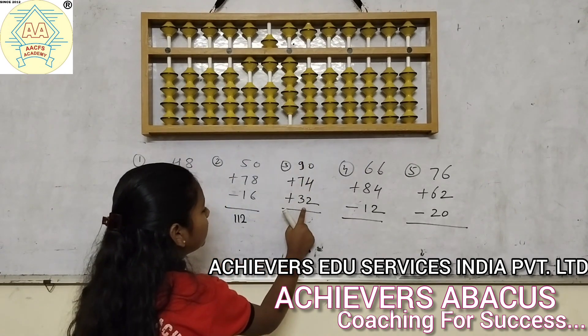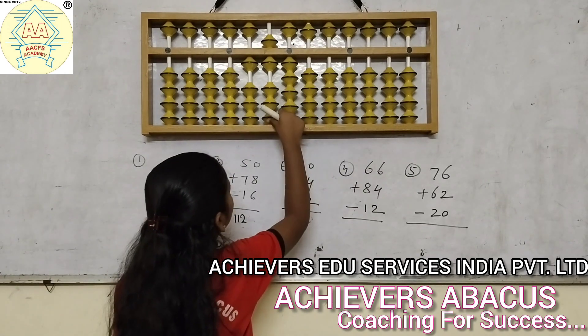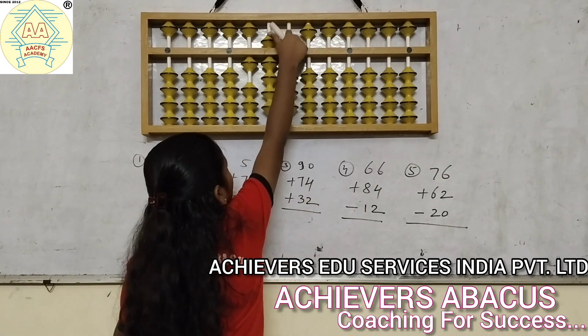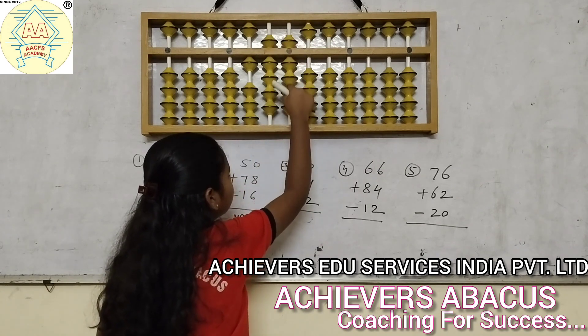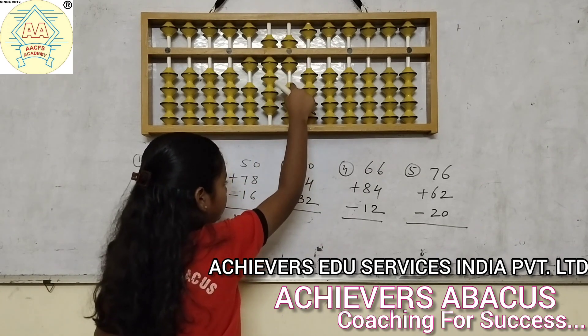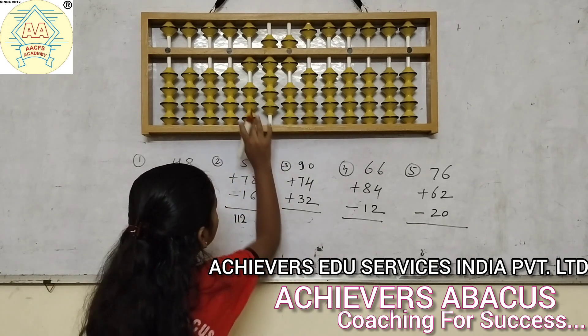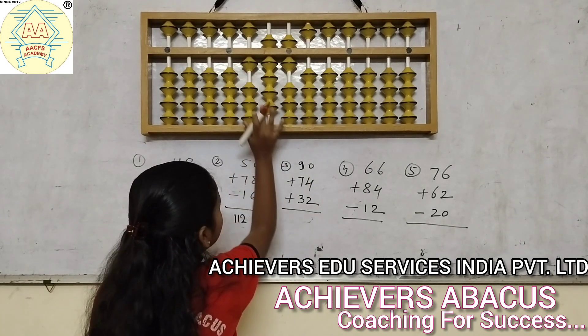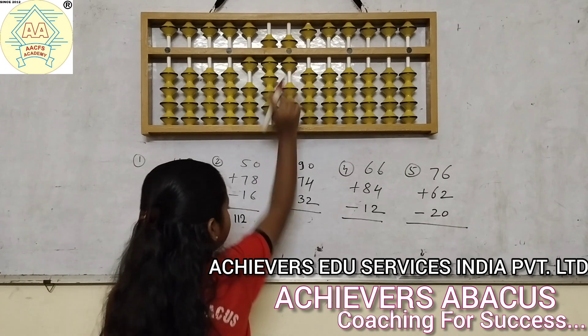And then we will add 4. Then add 32: add 30, and then add 5, less 3. So our answer is 196.